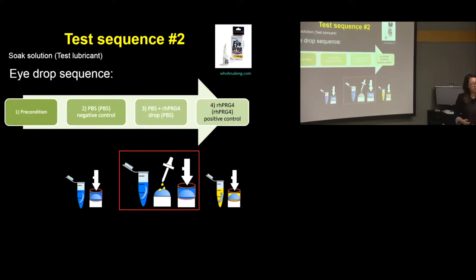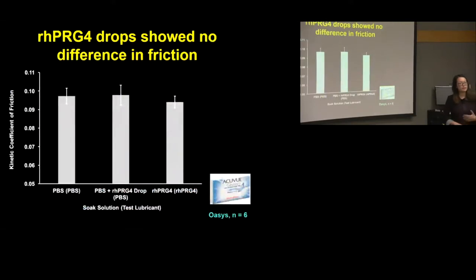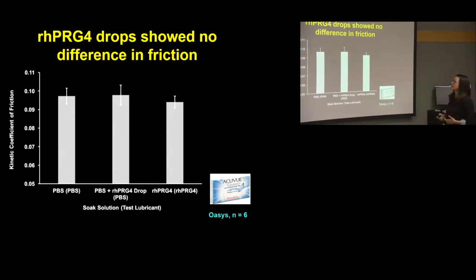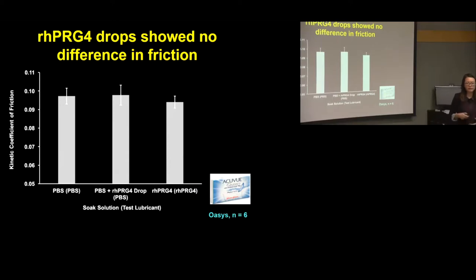I started my testing with the instant drop sequence using the AccuView Oasis lens. The kinetic coefficient of friction is on the vertical axis with different test solutions on the horizontal axis. Interestingly, these results showed no significant difference in friction between the test conditions — which was surprising since previous work had shown that RH-PRG4 does reduce friction.